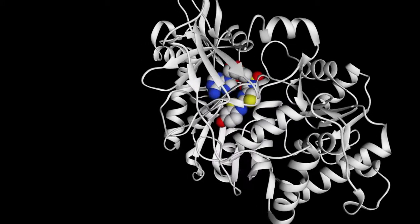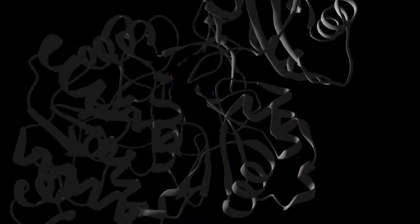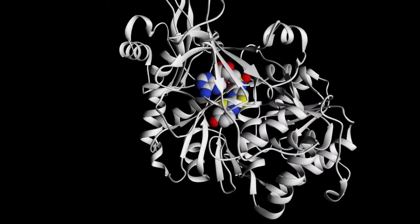The open form of the luciferase structure represents the ground state before the reaction has occurred, whereas the closed form represents the active form of the enzyme during conformation. The enzyme is in its open form now and has not reached its excited state yet. This is known as its ground form.